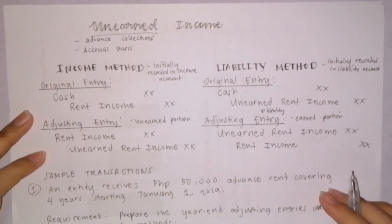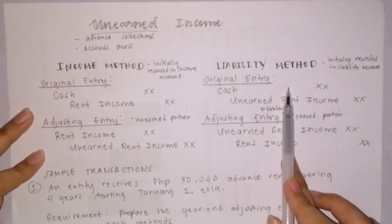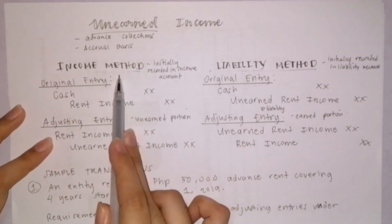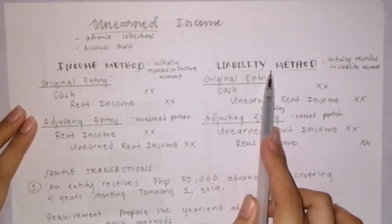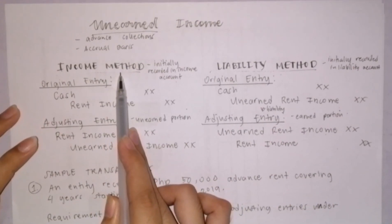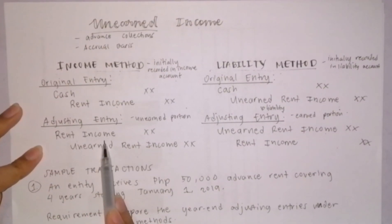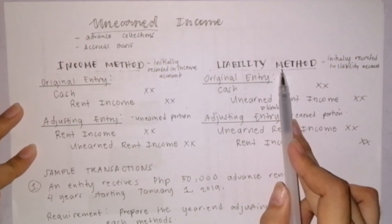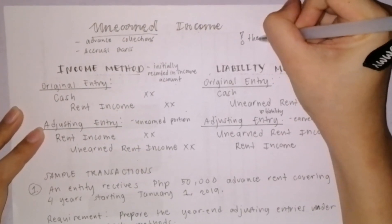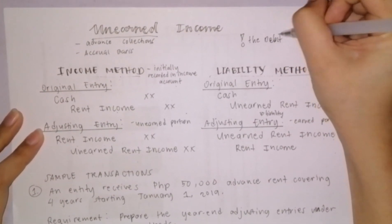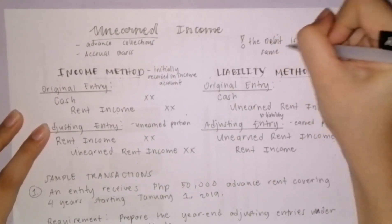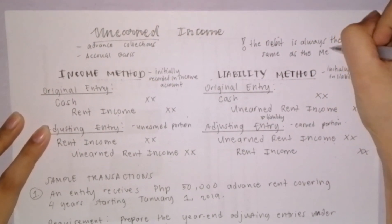Always remember these two methods: the income method and liability method. It is up to the company which one they will use. When recording adjusting entries for unearned income, whatever method is used, the debit is always the same as the method. If the income method is used, the adjusting entry debit is to the income account — rent income. If the liability method is used, the adjusting entry debit is to the liability account — unearned rent income. The debit is always the same as the method — this will help us when recording adjusting entries so we don't get confused.